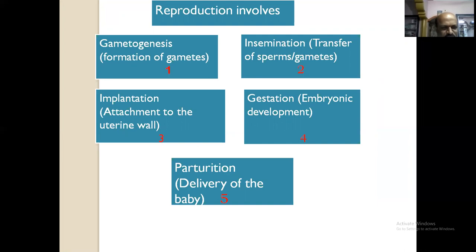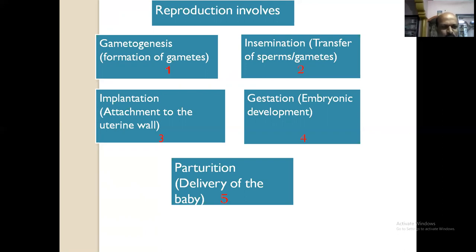Gametogenesis is the formation of gametes. Male gametes are sperm cells, whereas female gametes are ova. Insemination is seen only in the human male — it is the transfer of sperms or gametes into the human female. Implantation is seen in the human female reproductive system, whereby the zygote is attached to the uterine wall. After fertilization occurs, the embryo is attached to the uterine wall — that is called implantation.